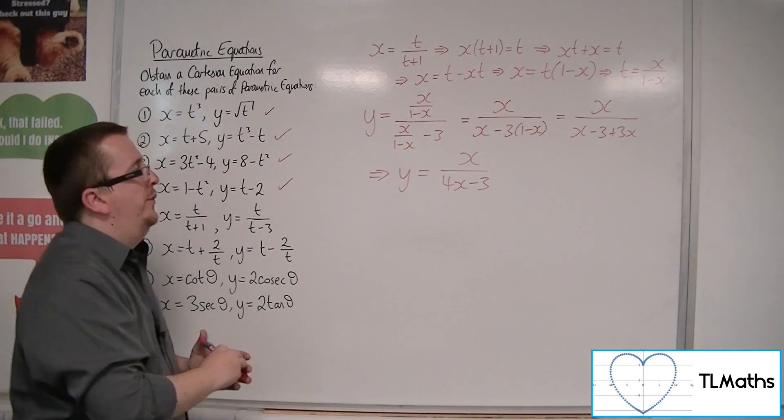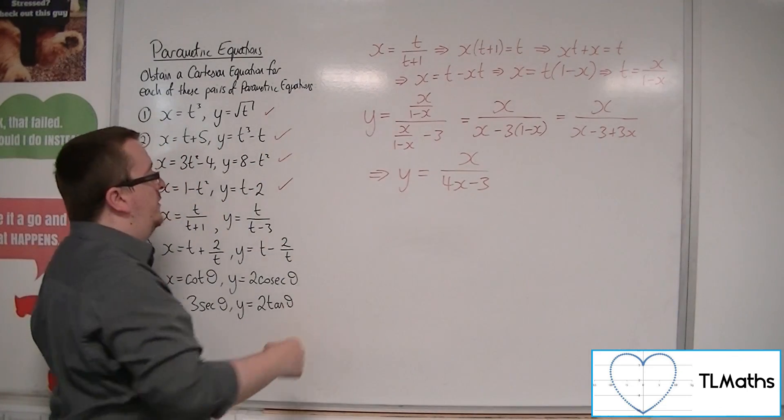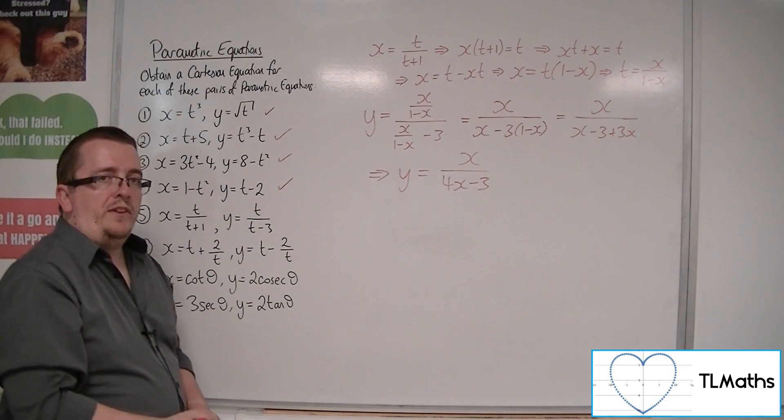So let's tidy that up. I've got x in the numerator. I've got x minus 3 plus 3x in the denominator. So y is equal to x over 4x minus 3. Okay, and that's much more tidy. And there is my Cartesian equation that represents number 5.